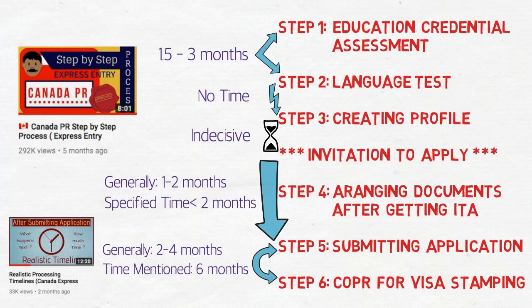One important thing to mention: I haven't included the PNP (Provincial Nominee Program) in these timelines. If your CRS score is quite low, you can apply for PNP programs, but there's no definitive timeline for that — you might receive an invitation from a province like Saskatchewan or Ontario within one week, or it could take up to a year.